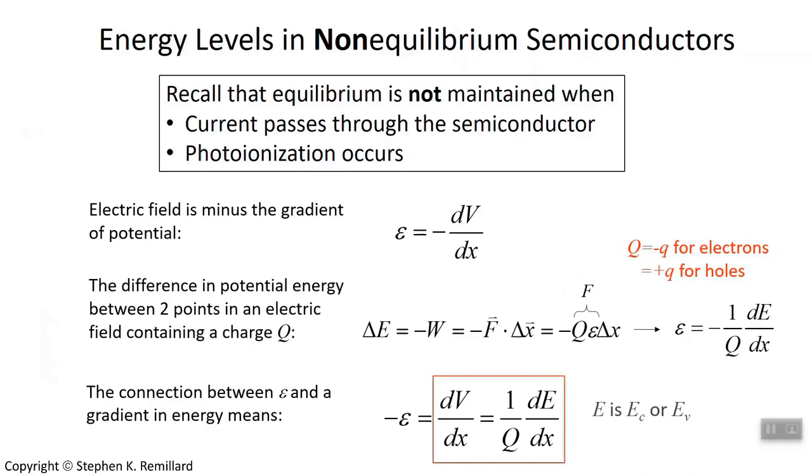Now, big Q is just a charge. And in semiconductor devices, we usually just have two different charges we talk about, plus little q and minus little q, the charge of a hole or the charge of an electron. So big Q is most usually going to be one of those two things. That's where just a rearrangement gives us a nice working equation. That electric field is minus one over the charge times the gradient of energy.